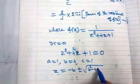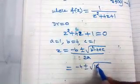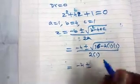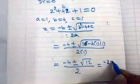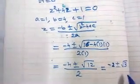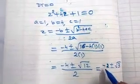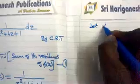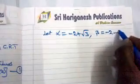Using the quadratic formula z = (−b ± √(b²−4ac)) / 2a gives z = (−4 ± √(16−4)) / 2 = (−4 ± √12) / 2 = −2 ± √3. So the two poles are α = −2 + √3 and β = −2 − √3.